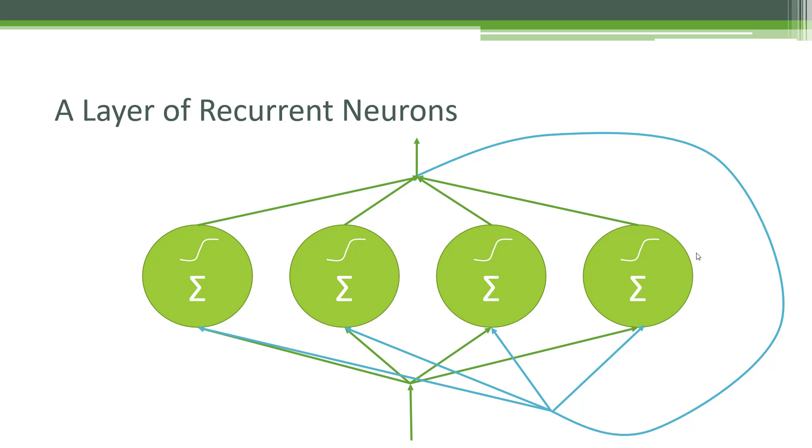So in this diagram, we are looking at four individual recurrent neurons that are working together as part of a layer, and you can have some input going into this layer as a whole. That gets fed into these four different recurrent neurons, and then the output of those neurons can then get fed back to the next step to every neuron in that layer.